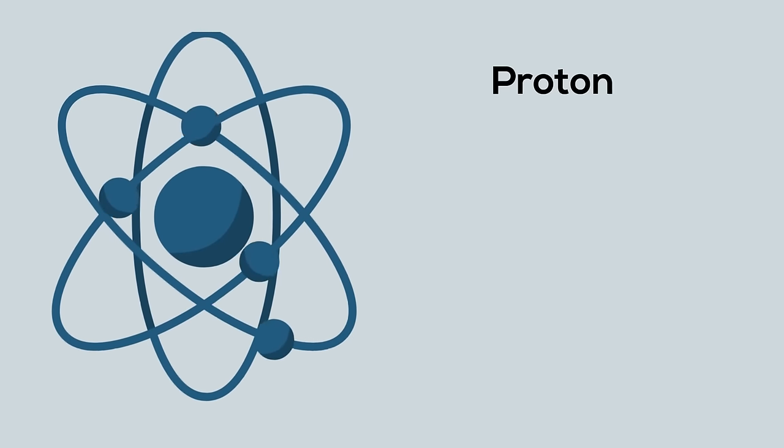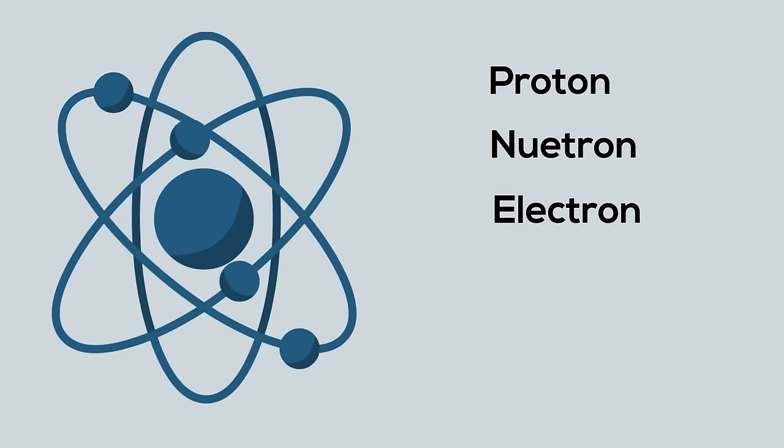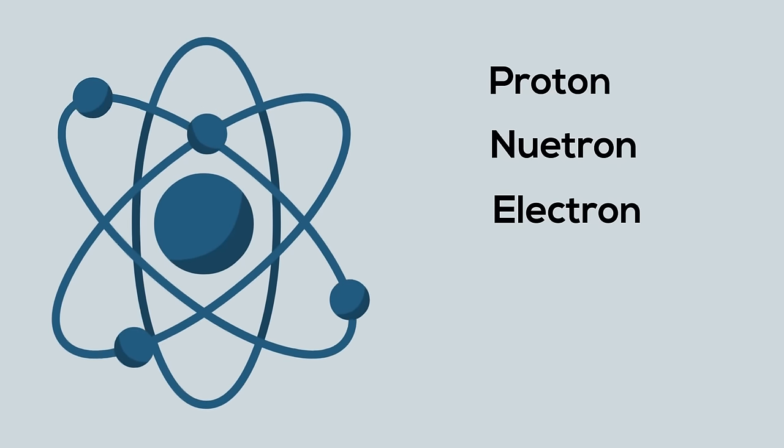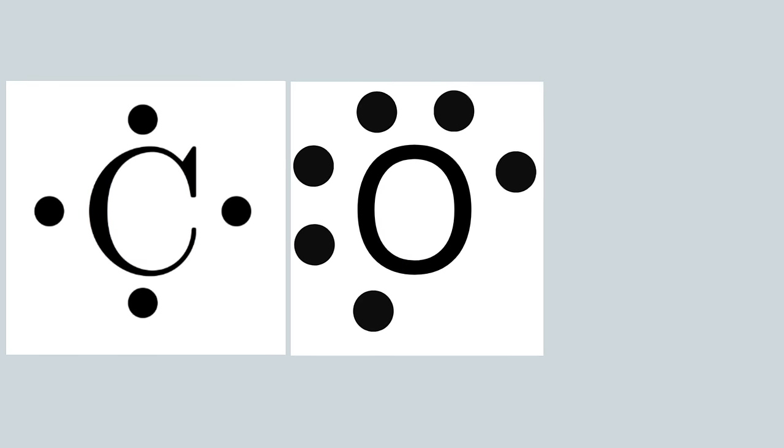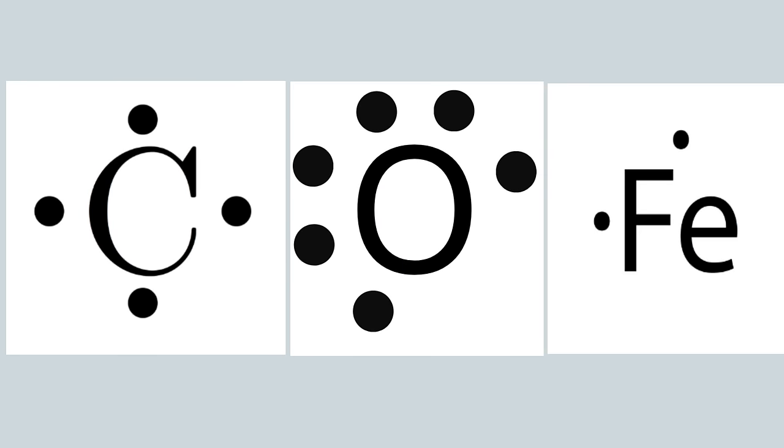An atom consists of a proton, neutron, and an electron. Some common examples of elements would be carbon, oxygen, or iron.